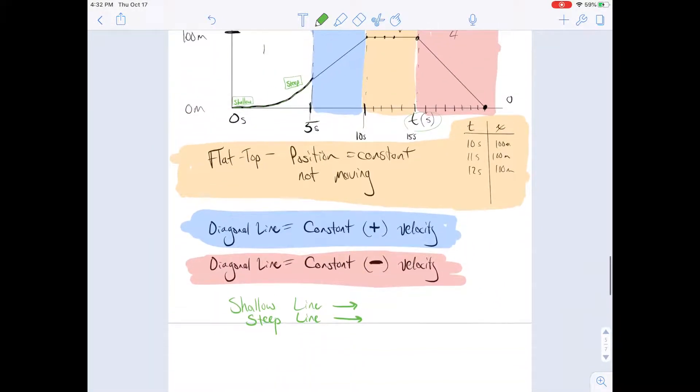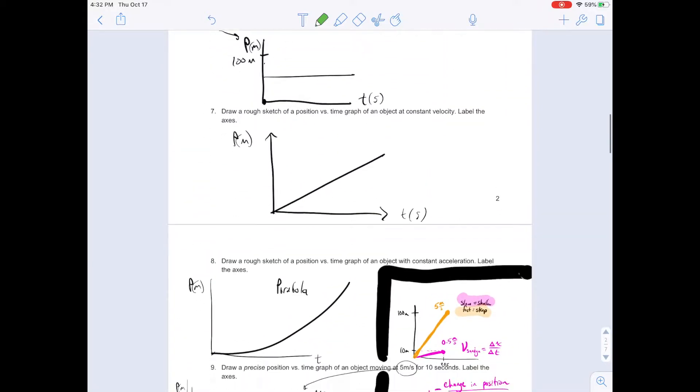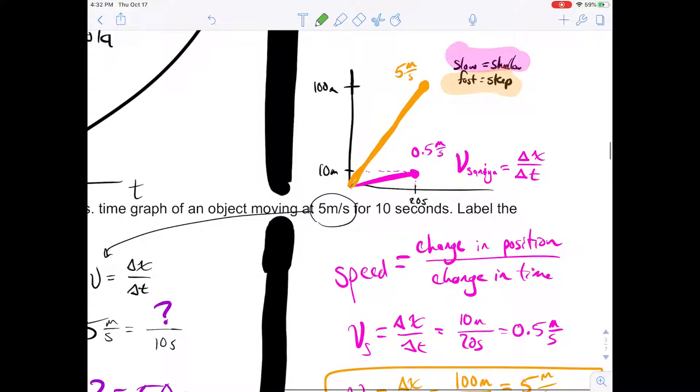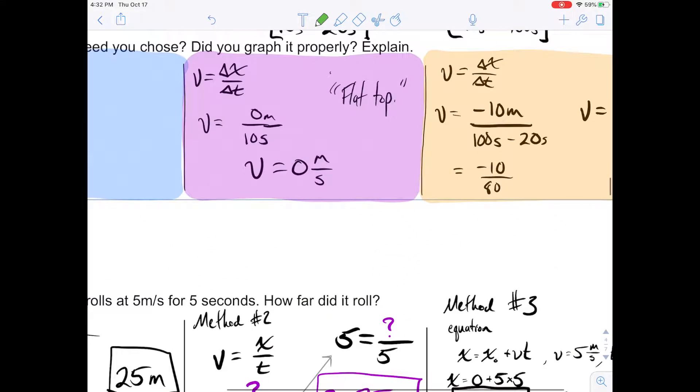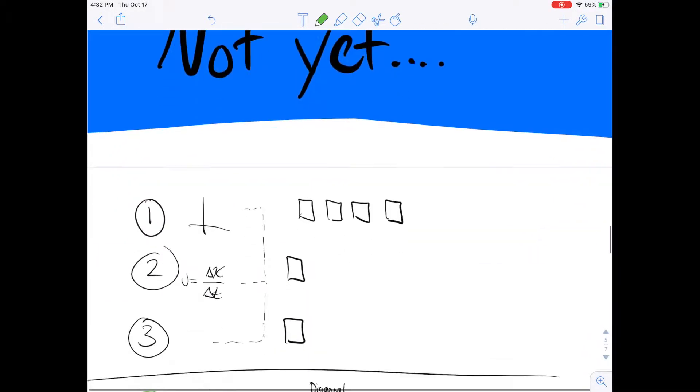Now, we did a couple examples of this in class, and I wonder if any of them are still here. We did. We looked at this one, where we had a shallow line versus a steep line, and we were able to calculate that in class. So you can look back at these notes if you're a little lost on that.